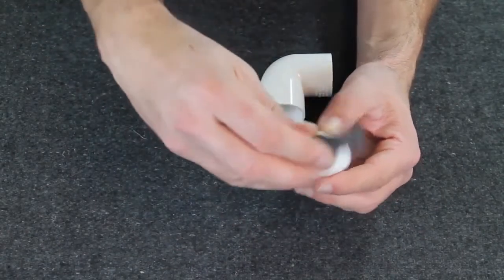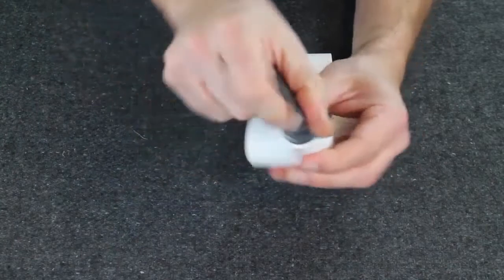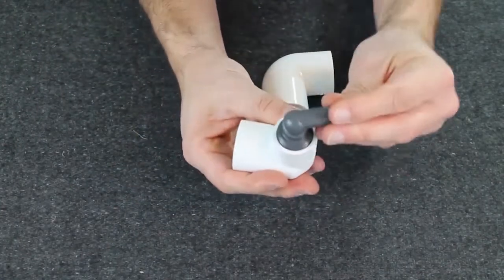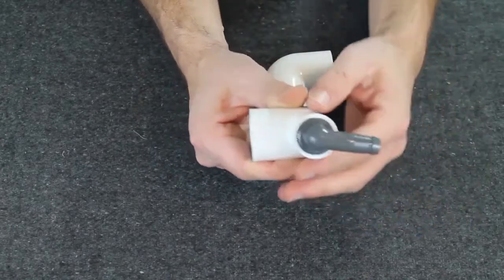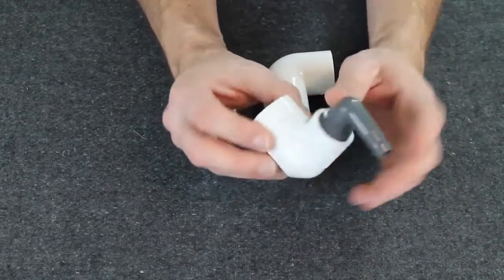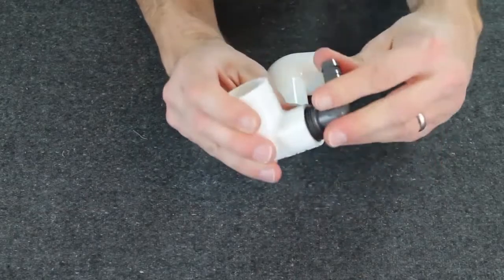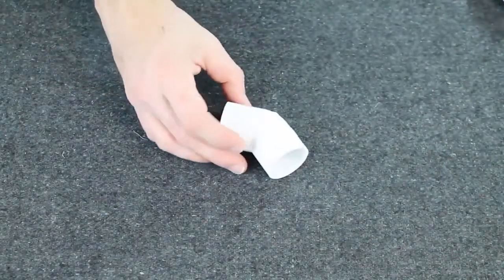We'll take the three quarter inch barbed elbow, thread it into here, and now we can attach half inch polyethylene on this and go out to a head. There are other places that we want to use this, but this is most commonly where it's used.